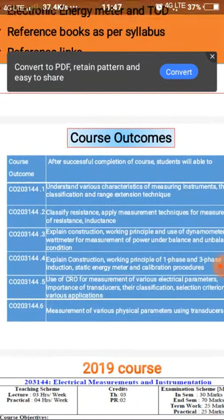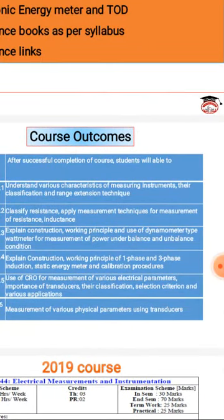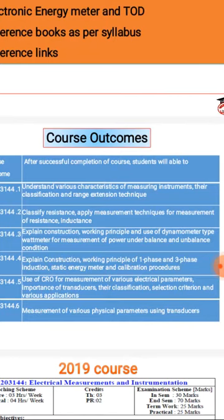Our course outcome to complete is: we are able to explain construction, working principle, and use of dynamometer type watt meter for measurement of power under balanced and unbalanced conditions.